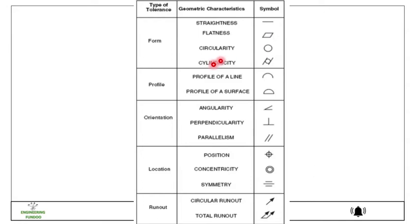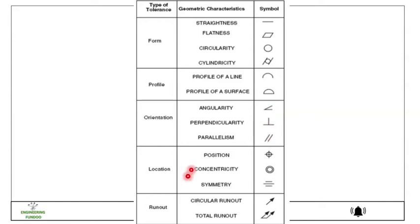The third category of tolerance is orientation. In this we have angularity, perpendicularity, and parallelism. Here you can see the symbol for each of these geometric characteristics.